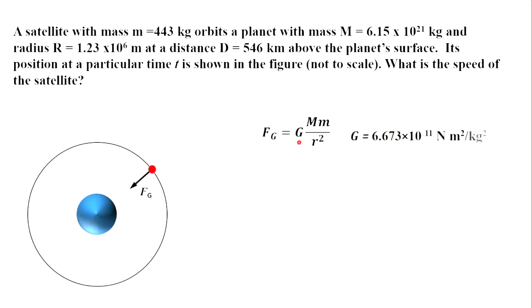M capital and small m are masses of planet and satellite correspondingly, and r is the distance between satellite and the planet.